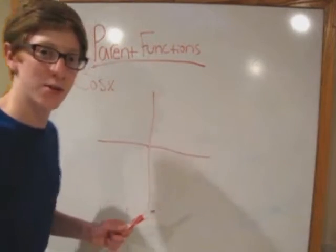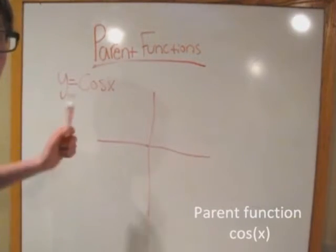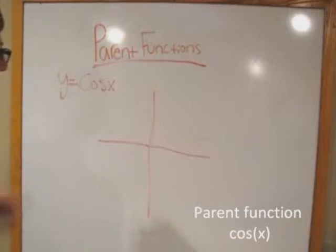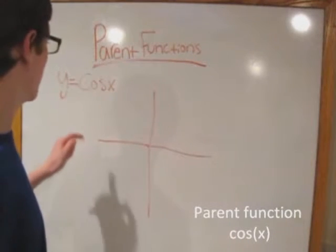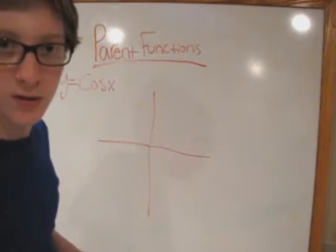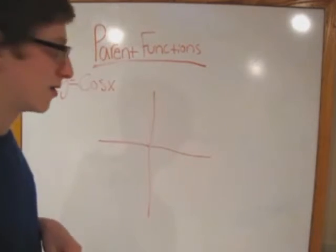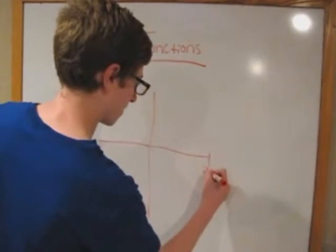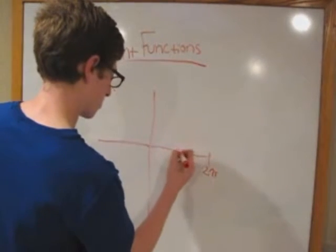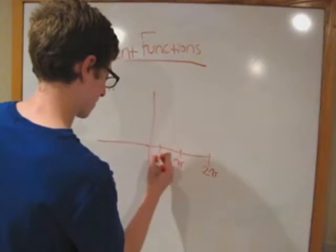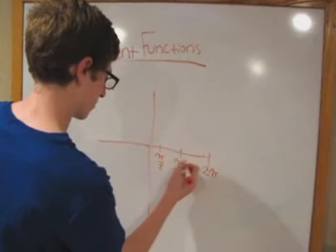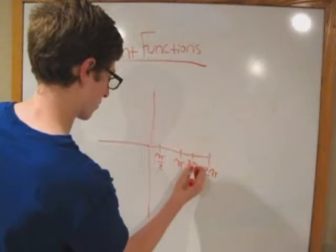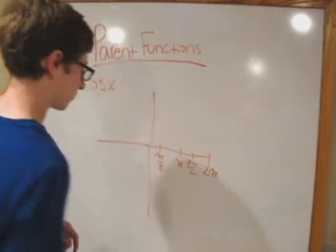So now what we're going to do is we're going to go ahead and graph the parent function of y equals cosine x. So first thing we know is the period of y equals cosine of x is 2 pi. So we can go ahead and label our points.